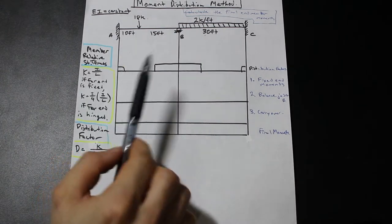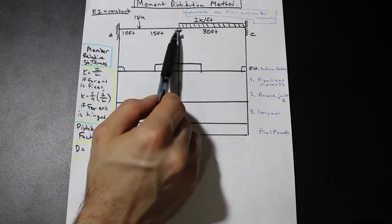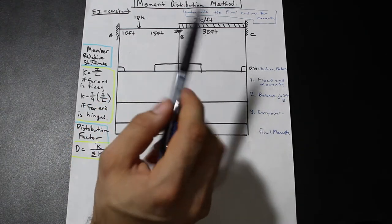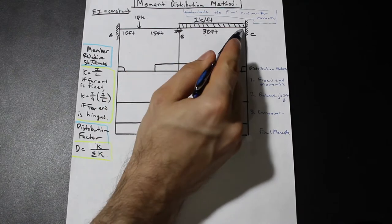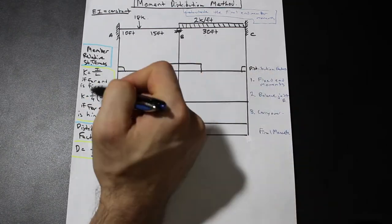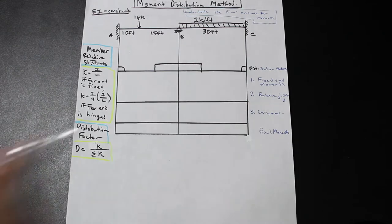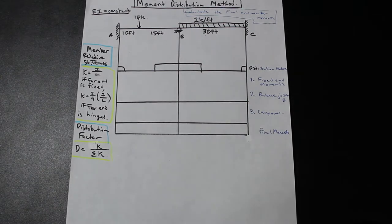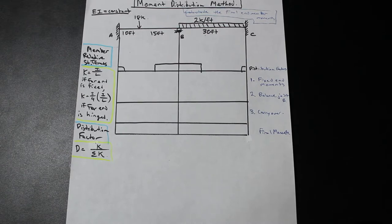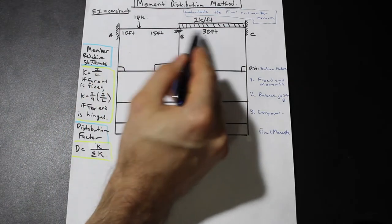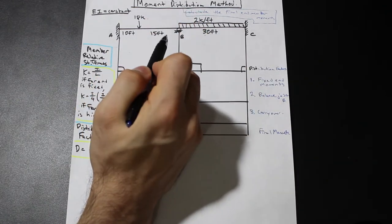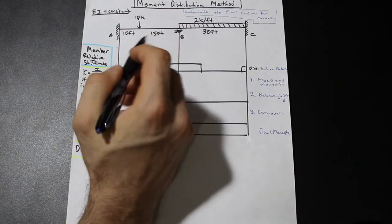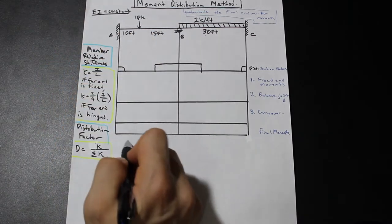We have k equals i over l if the far end is fixed. For a fixed-hinge configuration, for example, and for a far end that is hinged — so a hinge on both sides in a continuous beam — that's going to be 3/4 times i over l for k. So the very first step in any moment distribution question is to solve for k for the members, the different sections of the beam. EI, as you can see, is constant.